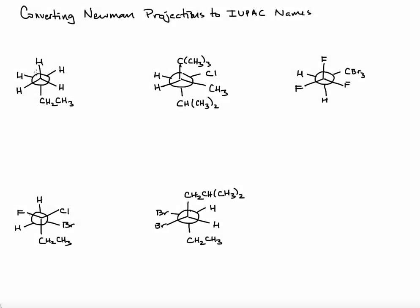In this problem-solving screencast, we're going to be looking at converting a Newman projection into the IUPAC name using the nomenclature rules learned in class. We have five examples of different Newman projections in the staggered conformation. To preface this session, we need to be cognizant that the Newman projection is always looking down a single carbon-carbon bond.